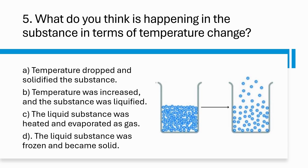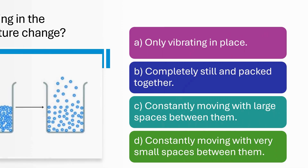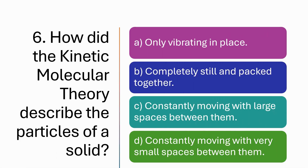How did the kinetic molecular theory describe the particles of a solid? A. Only vibrating in place. B. Completely still and packed together. C. Constantly moving with large spaces between them. D. Constantly moving with very small spaces between them.